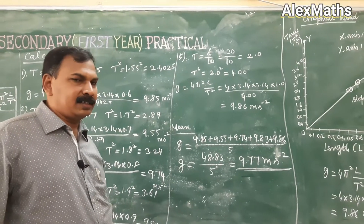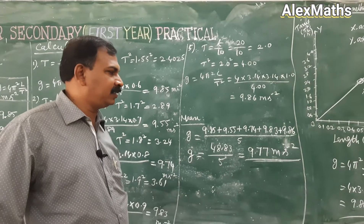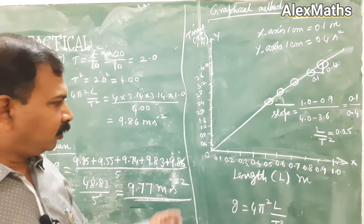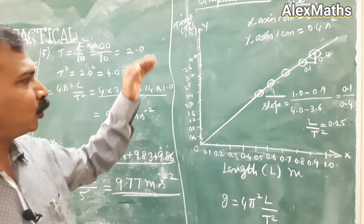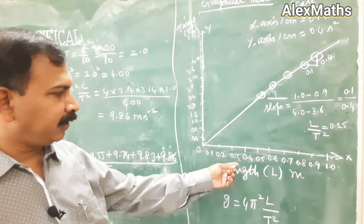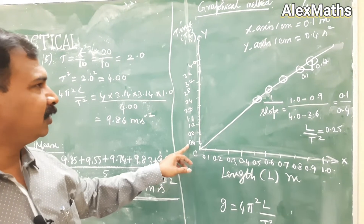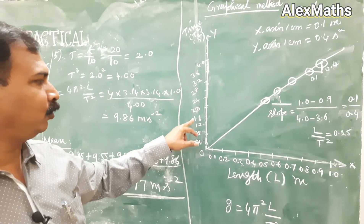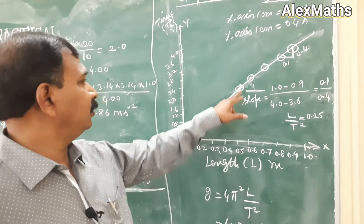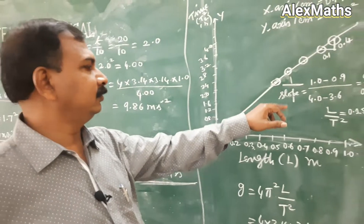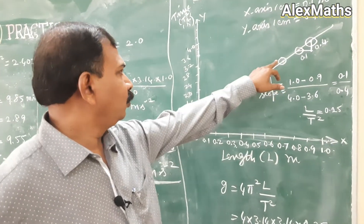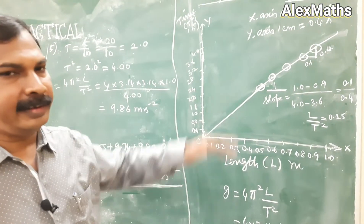The result: acceleration due to gravity g = 9.77 m/s² at MCC. Now for the graphical method: plot the length along the x-axis and time period squared (T²) along the y-axis. On the x-axis, 1 cm = 0.1 m; on the y-axis, 1 cm = 0.4 s². For 0.6 m, T² = 2.4, so plot that point; for 0.7 m, T² = 2.89, and so on. You will get a straight line — a linear graph.